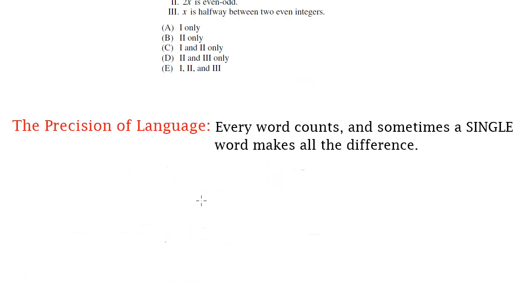So what it comes down to in the end is this idea that I'm going to repeat again and again: the precision of language. Language can be precise. Sometimes it's seen to be this really fluffy thing, but every word, especially in the critical reading section of the SAT, counts. And sometimes a single word can make all the difference between getting the answer right and getting the answer wrong.